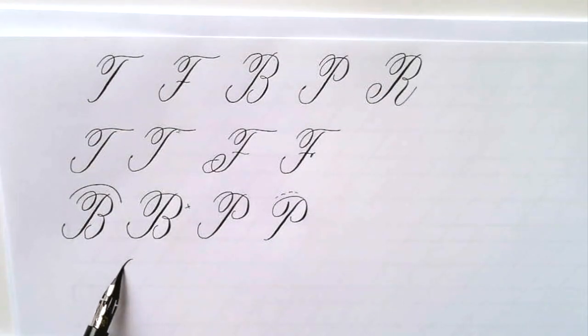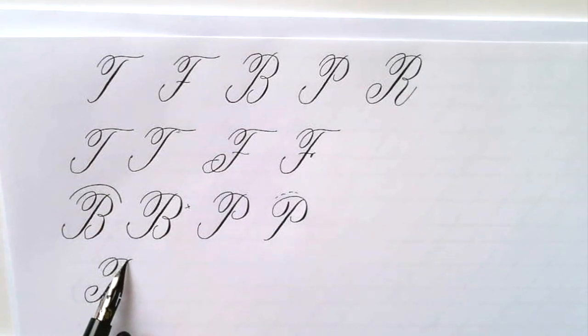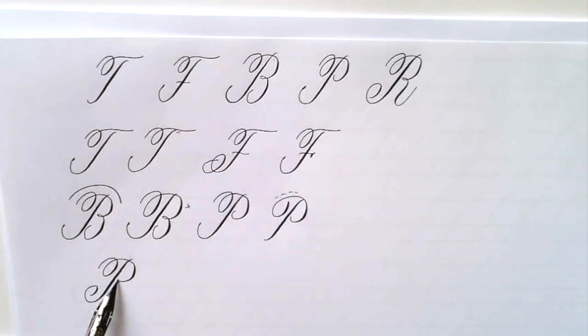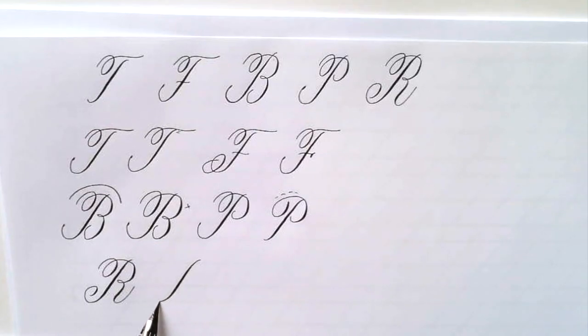The R dynamic stem, the spiral and the coming around and then almost a compound curve that has to follow the slant again. Just making sure that everything is boxed into that 55 degree angle so it looks similar to the other letters.